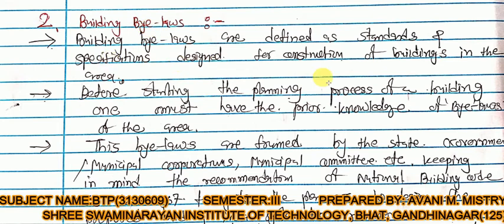The next topic is building bylaws. Building bylaws are defined as the standards and specifications designed for the construction of buildings in an area. This includes room sizes, how much area of a plot can be used, room height, and light plane requirements. Before starting the planning process of a building, one must have prior knowledge of the bylaws of the area.